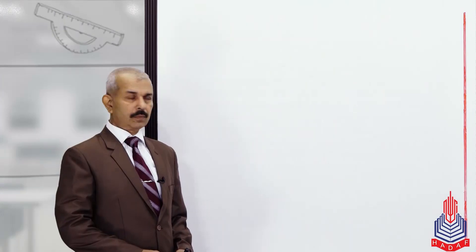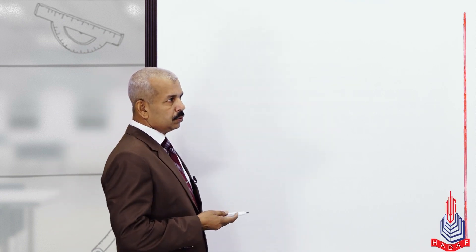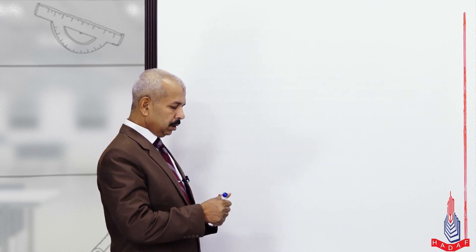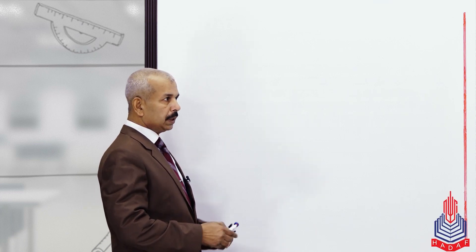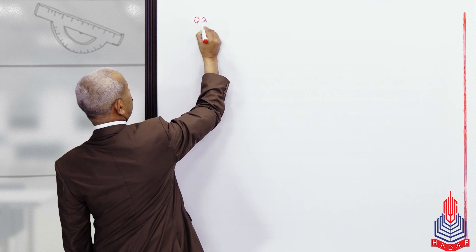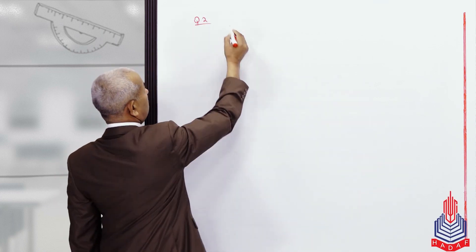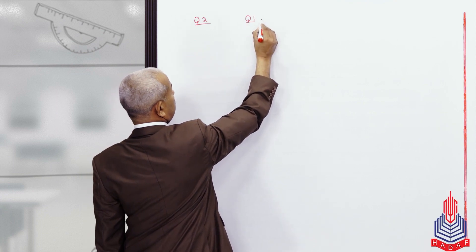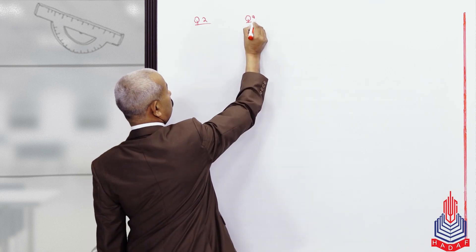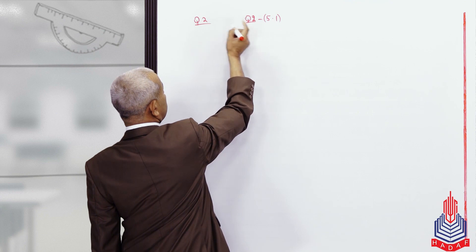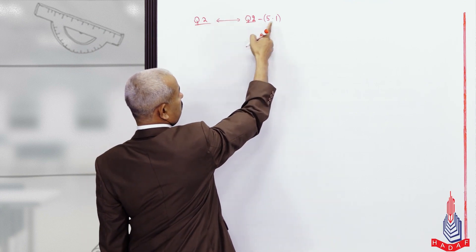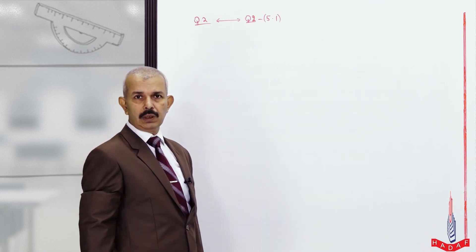Let's move to part one. The last question we did was Question Number 1. The calculation in its last part — part 8 — may have a small mistake in the final step, so please check that. Now moving to Question Number 2: the textbook authors are kind enough to give the same question twice. Question 2 of the review exercise is identical to a part of exercise 5.1, so you don't need to redo it — just repeat it.